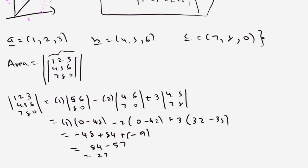So the final outcome will be 84 minus 57, which is 27. So the area will be |27|, which means 27. So that is the way how we find the area of some parallelepiped formed by a determinant of order 3.